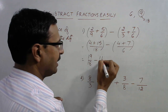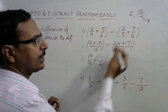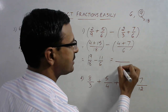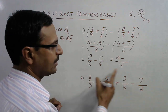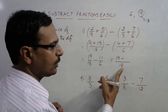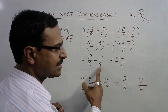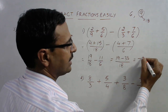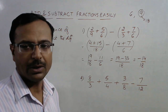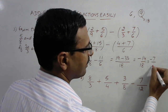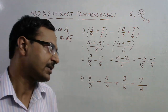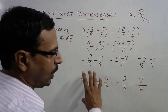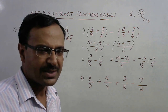This gives us 19/18 minus 11/6. Again applying the second shortcut: 6 exactly divides 18, so LCM is 18. 19 stays as is; 18÷6=3, and 3×11=33. So the result is (19−33)/18 = −14/18. Reducing to lowest form by cancelling the common factor of 2 gives −7/9 as the final answer.